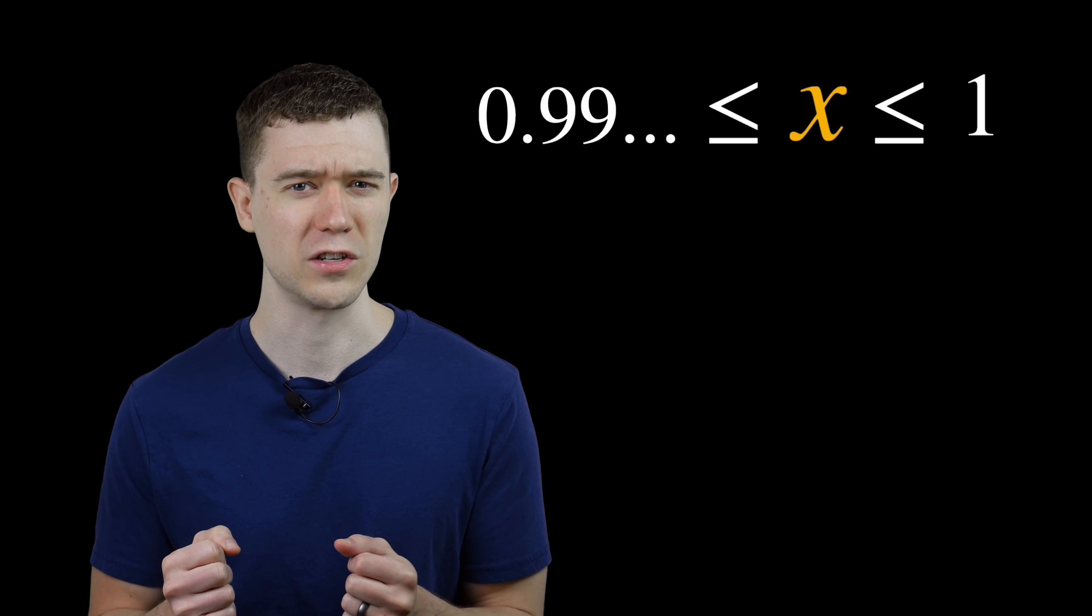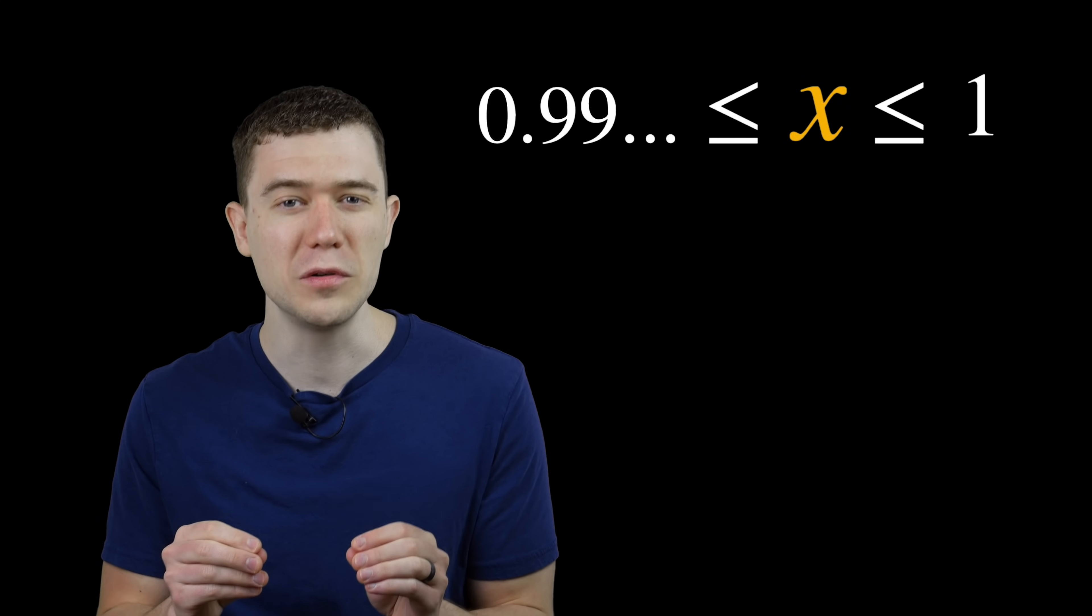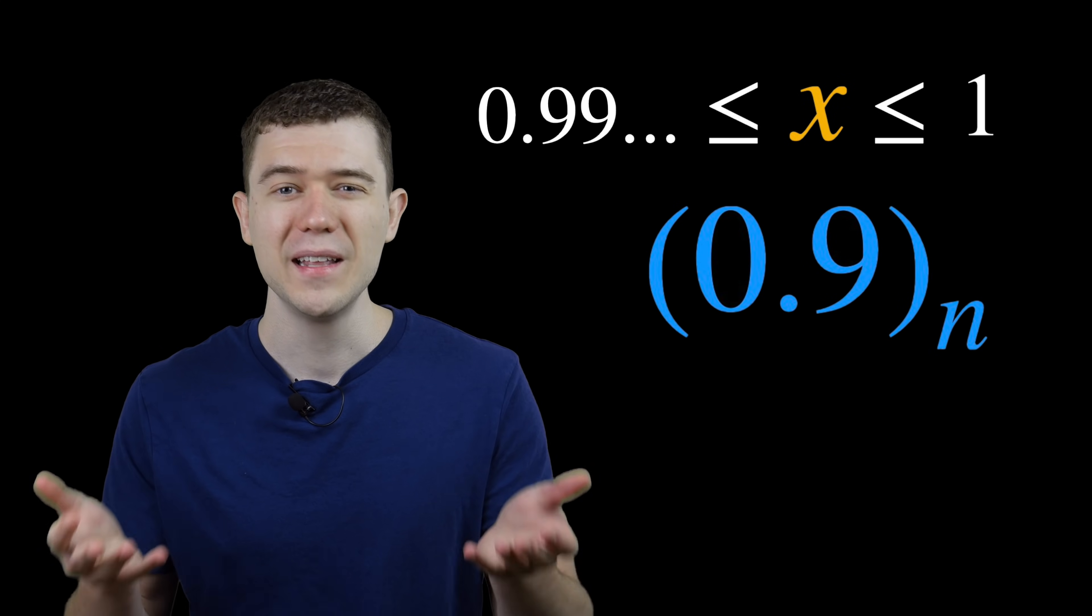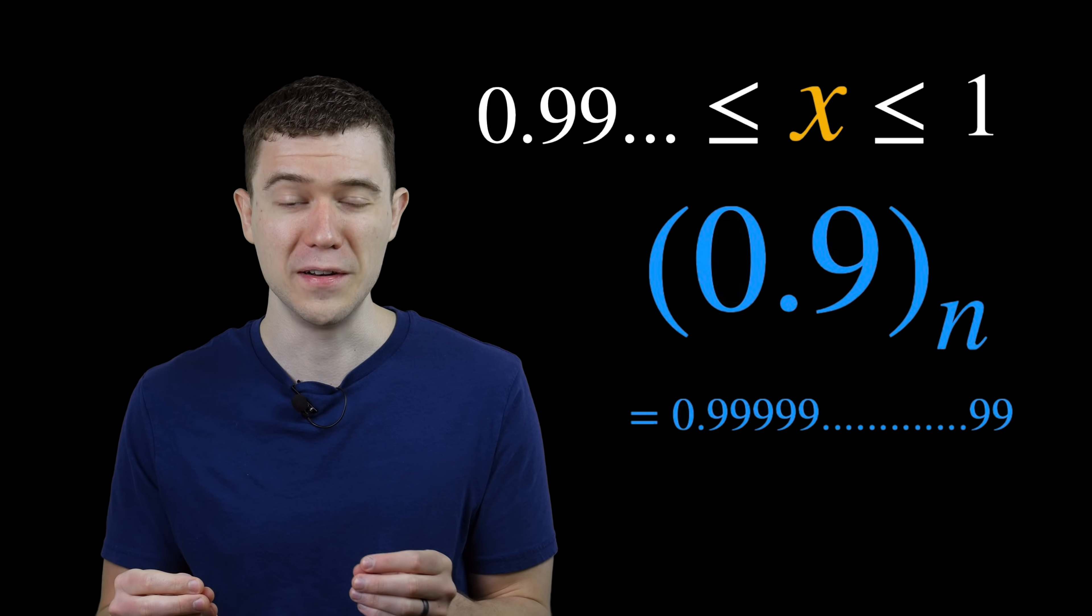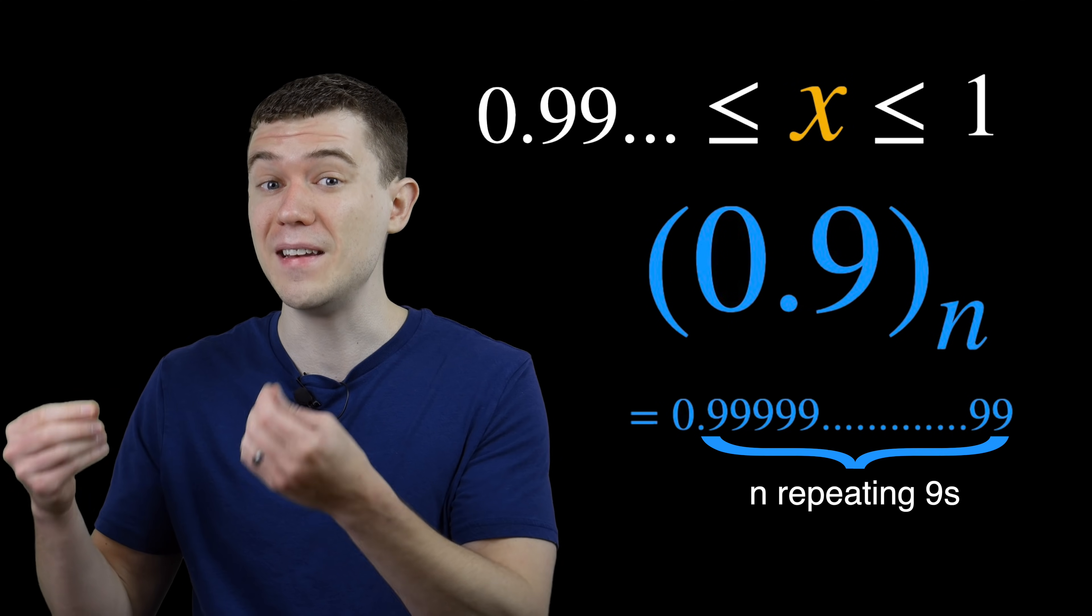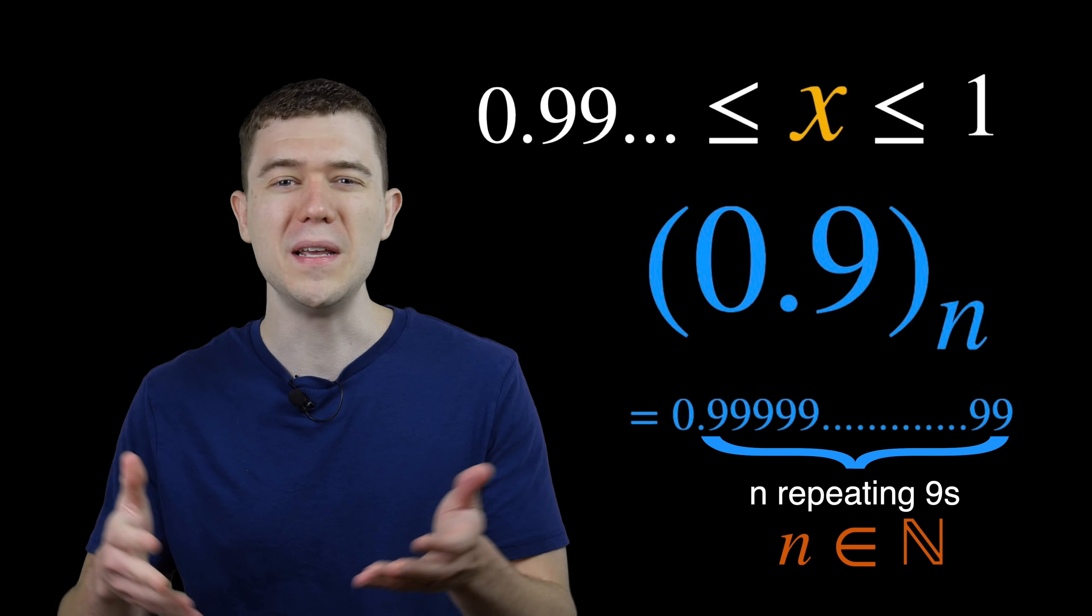Let's try to figure out what x should be. To do that, let me introduce a new notation, 0.9 sub n. This represents the sequence of nines with n nines repeating. Here, n can be any natural number.